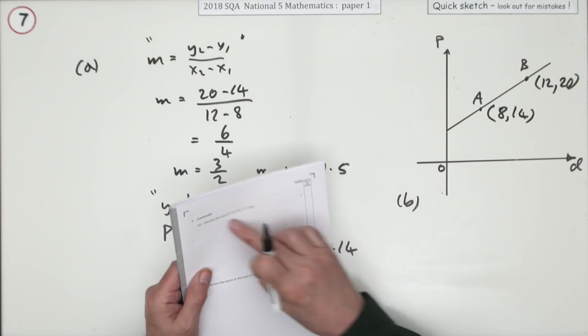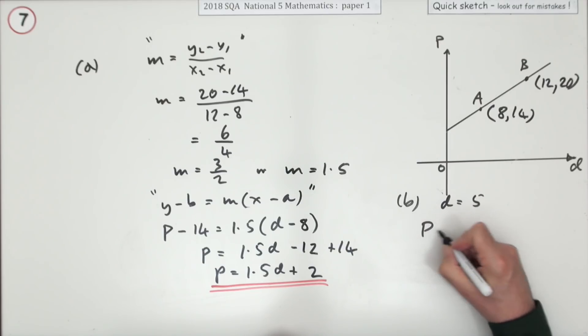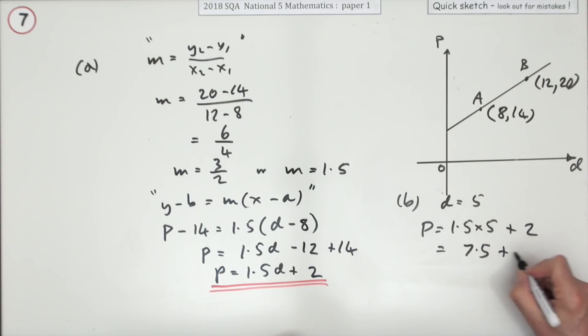So in part b, what's the cost of a journey of 5 miles? In other words, d equals 5, so what's p? It'll be 1.5 times 5 plus 2. Five 5s are 25, carry the 2, if I want the 5 and 2, 7. It's 7.5 plus 2, which is 9.5. But since it's money, put in two decimal places.